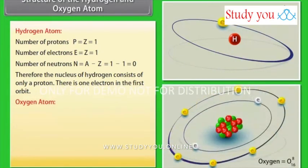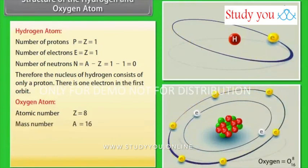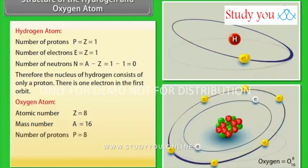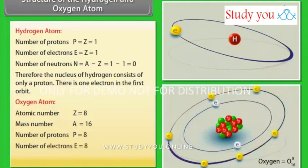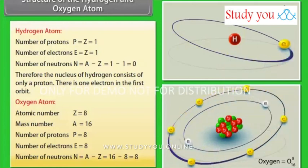Oxygen atom. Atomic number Z equals 8. Mass number A equals 16. Number of protons P equals 8. Number of electrons E equals 8. Number of neutrons N equals A minus Z which equals 16 minus 8 which equals 8.